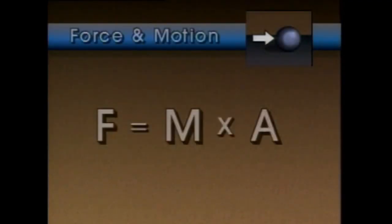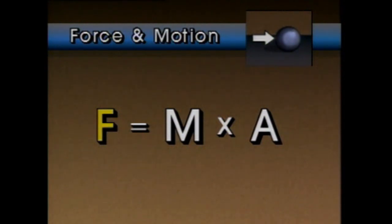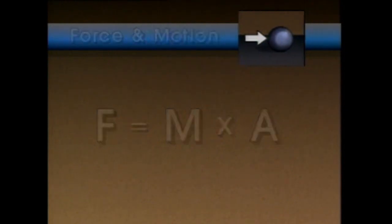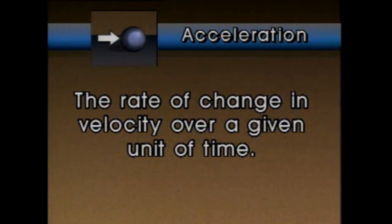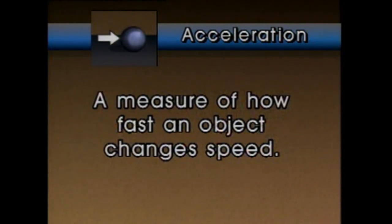The second law deals with the applied force. Simply stated, the second law says that force, F, equals mass, M, times acceleration, A. Acceleration can be defined as the rate of change in velocity over a given unit of time. A change in velocity may cause an object to either speed up or slow down. So basically, acceleration is a measure of how fast an object changes speed — either speeding up or slowing down.